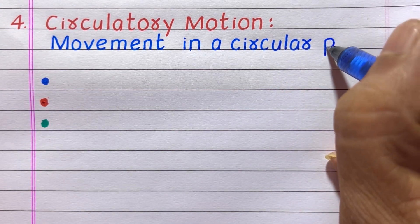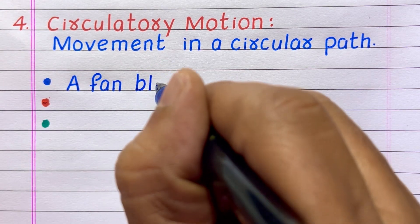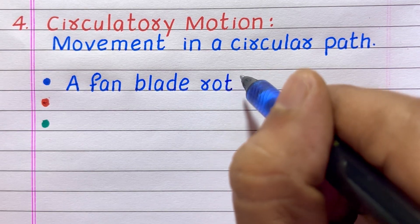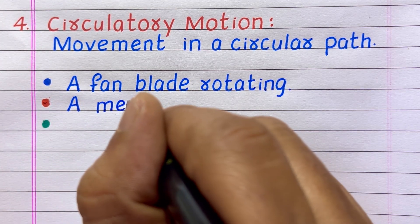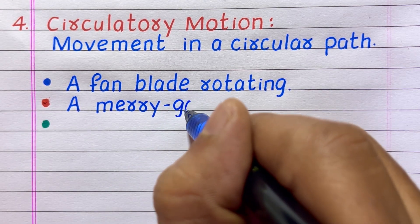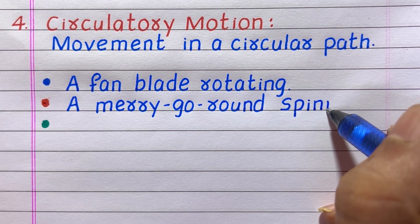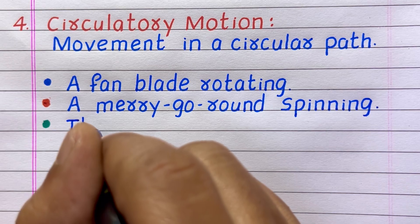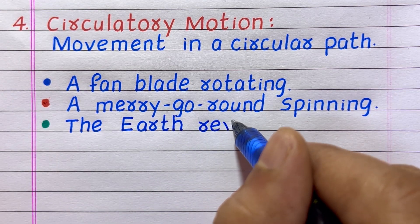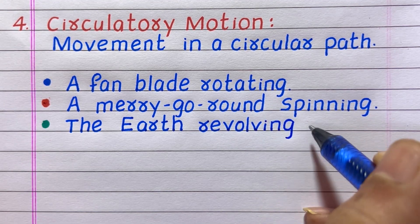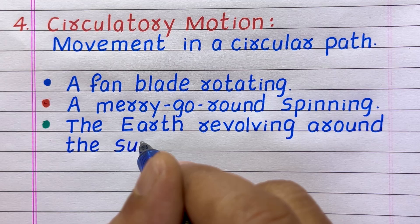Movement in a circular path is called circulatory motion. Examples: first, a fan blade rotating; second, a merry-go-round spinning; third, the Earth revolving around the Sun.